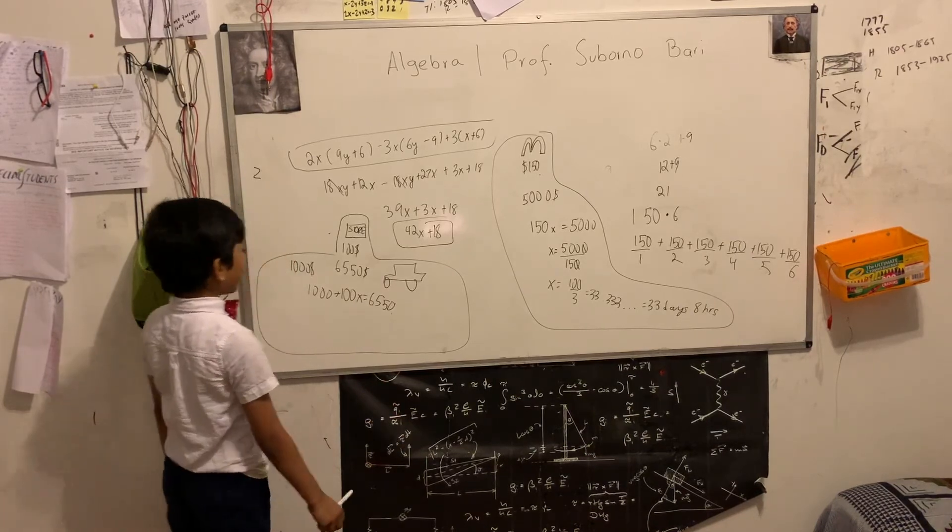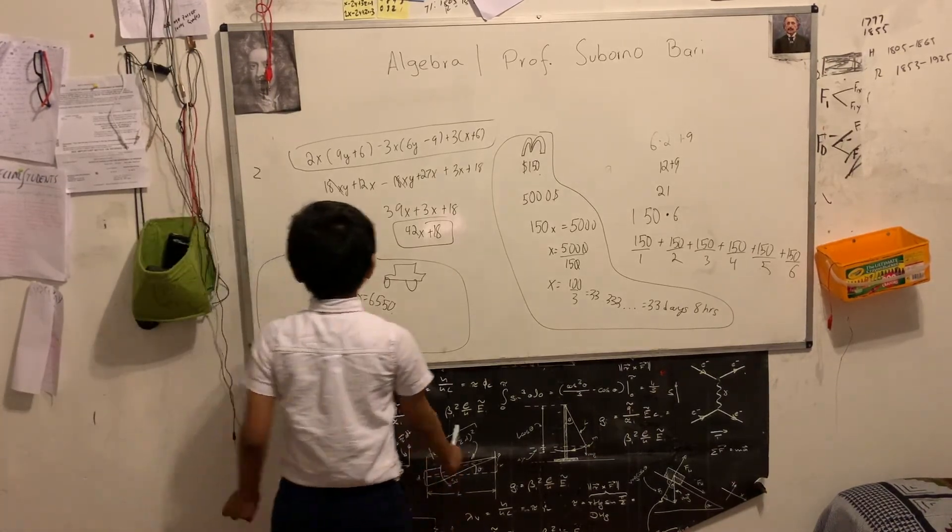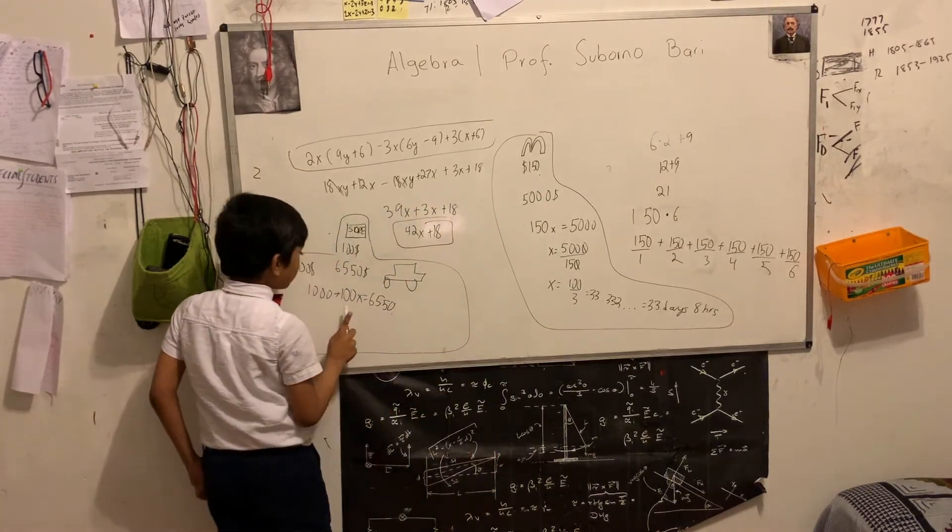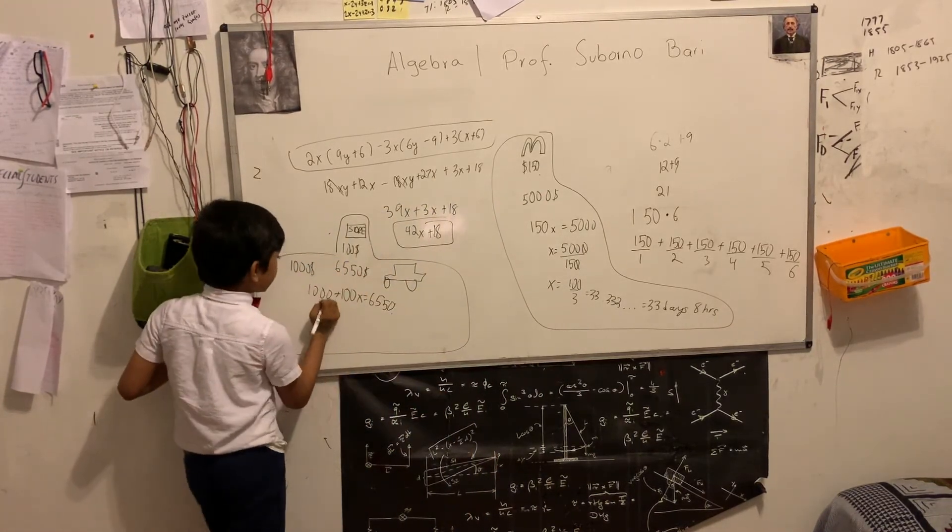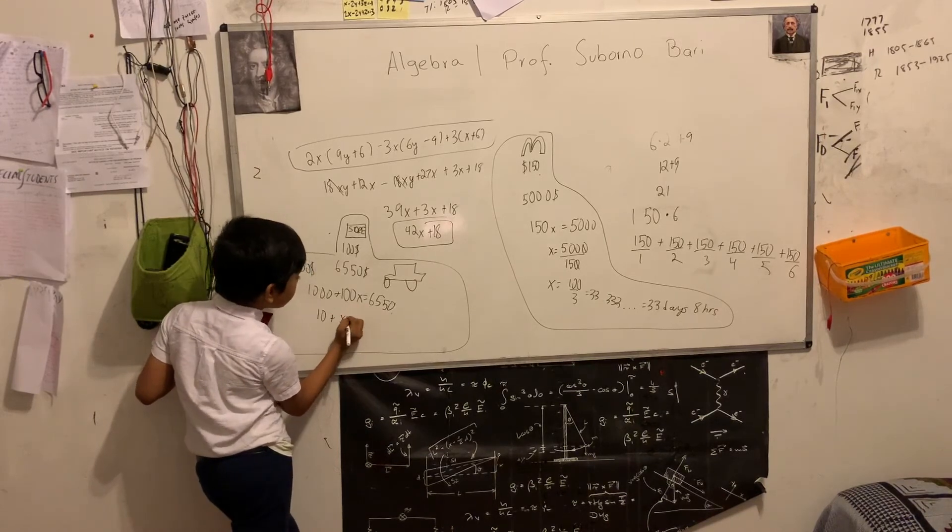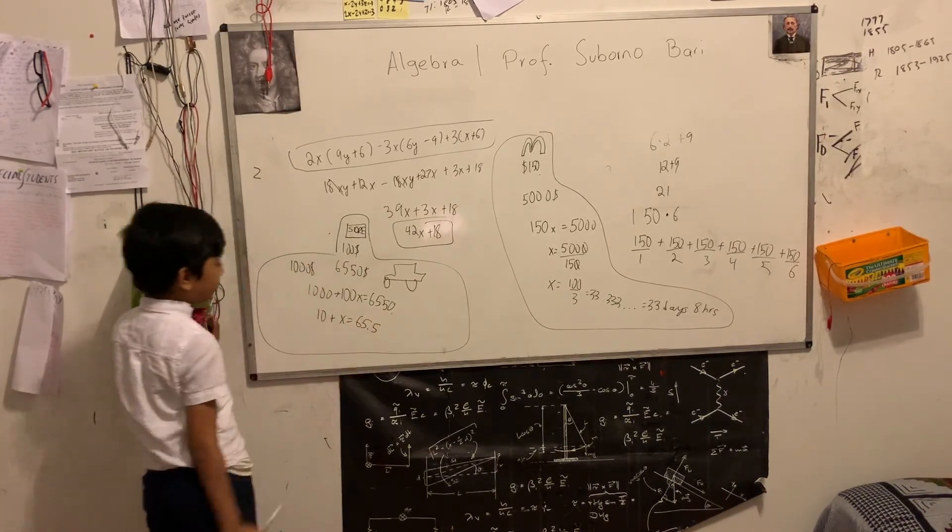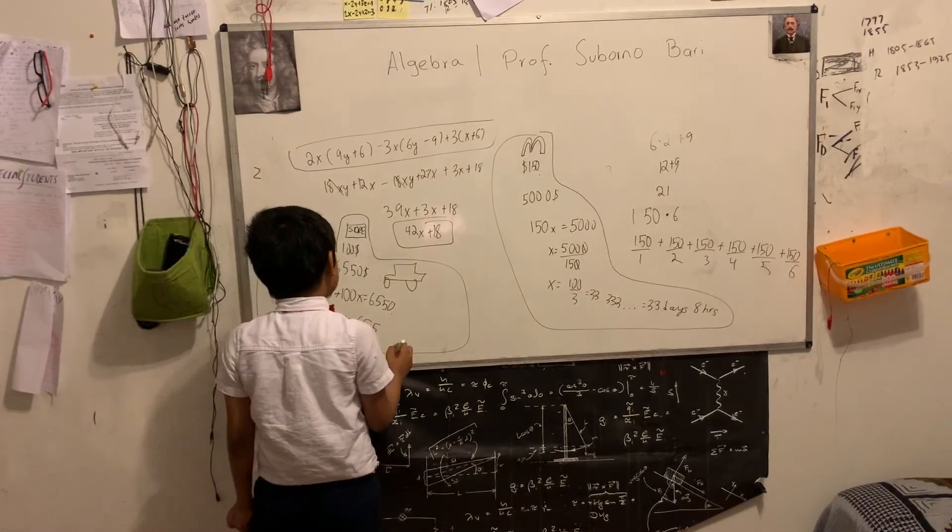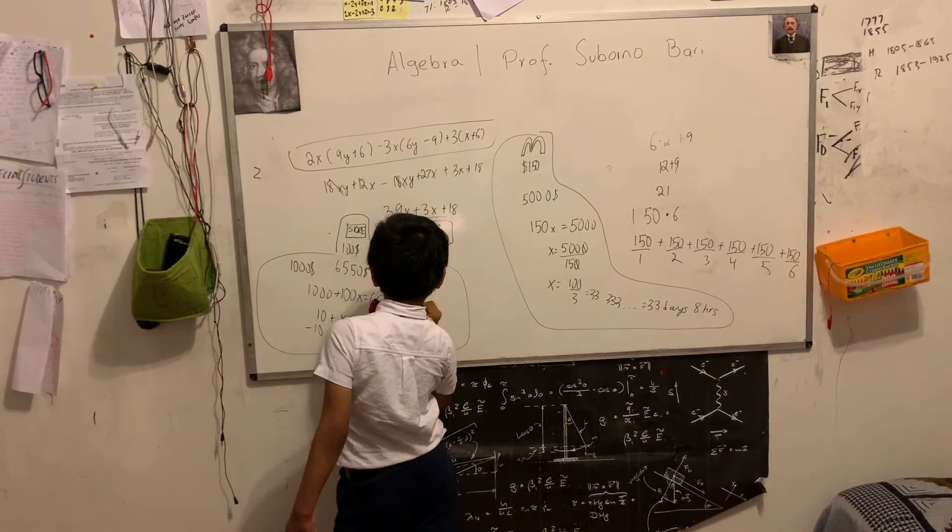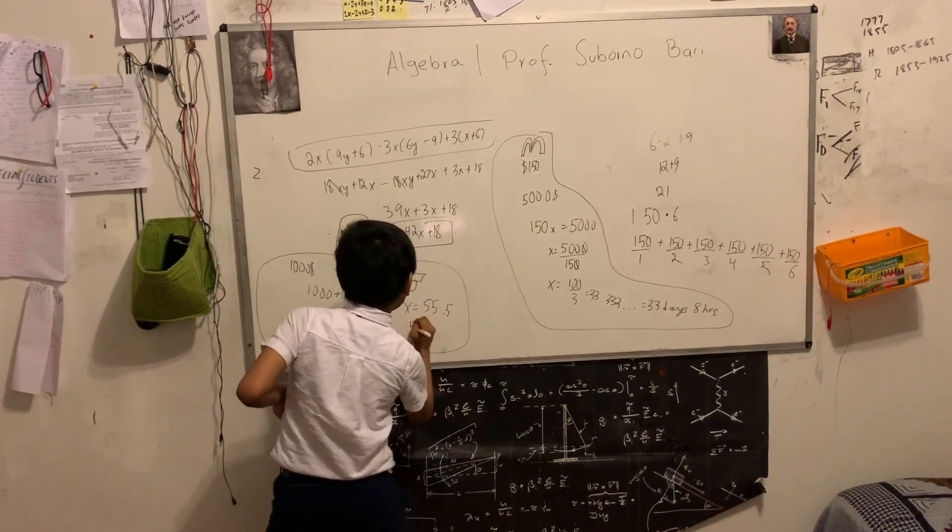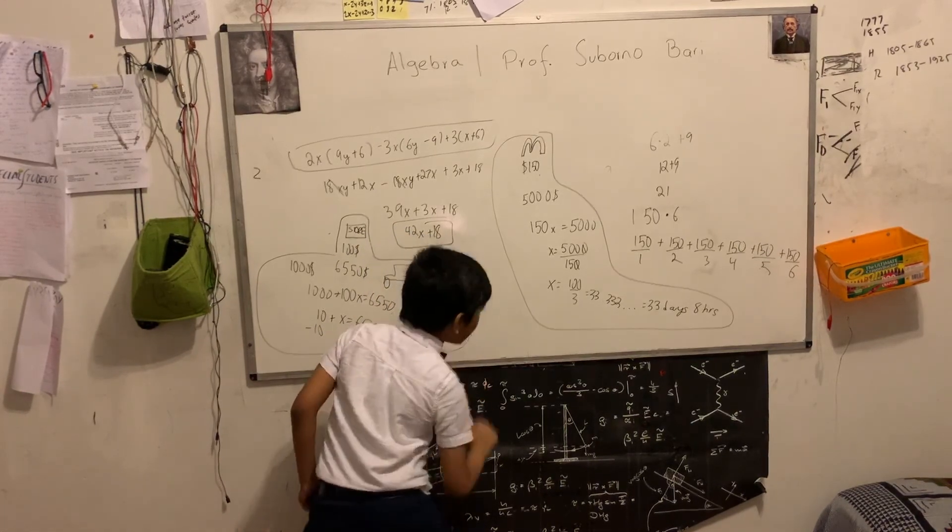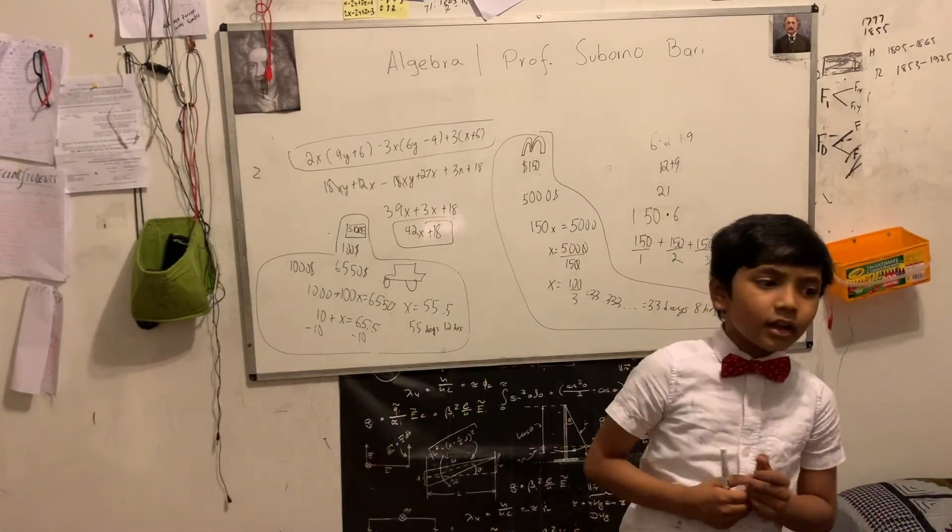Now dividing everything by $100 won't really work out right here. Or will it? Because these might all be factors. So that's going to be $1,000 divided by $100 is $10. And then $10 plus $x equals to $65.5. So now we can subtract $10 from both sides using the addition property, giving us x equals $55.5. That means you're going to be working for 55 days and 12 hours. Or around a month and a half.